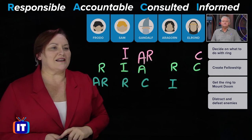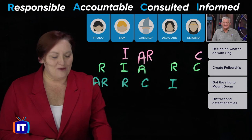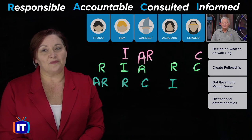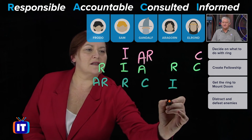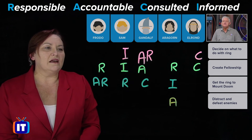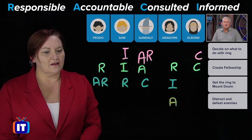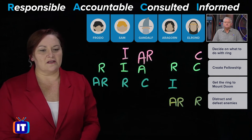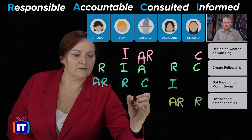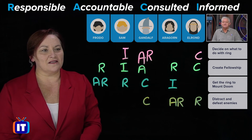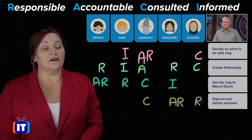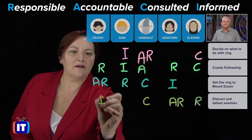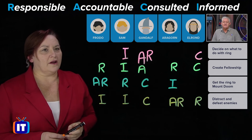Now we're on to distracting and defeating enemies. Who makes sure that enemies are distracted and defeated? Accountable would be Aragorn — he's the person that actually leads the charge. Responsible is also Aragorn, and Elrond as well. Is anybody consulted? That would be Gandalf the White at that point. Informed would be Frodo and Sam — they're not in the big battle, but they need to know what's going on.